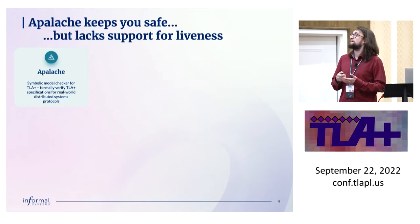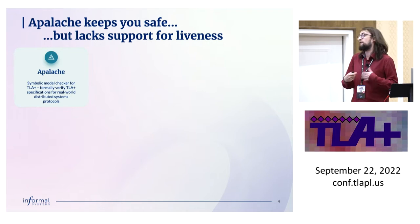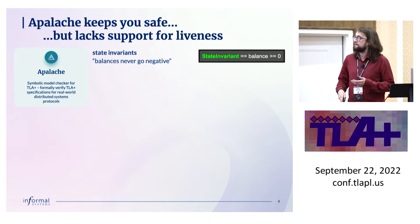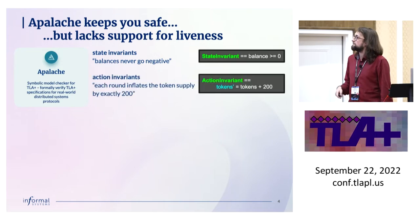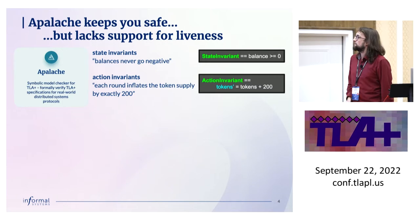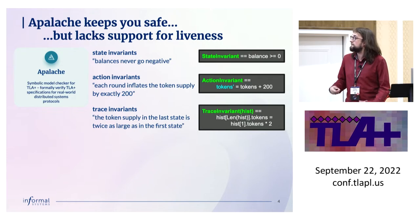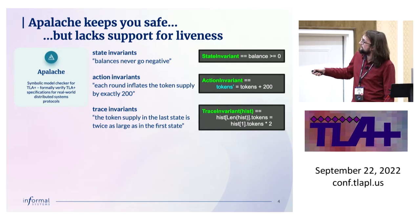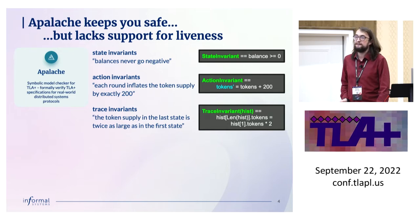Apalache is good for safety properties, but it lacks proper support for liveness. You can state invariants — for example, some balances never go negative — which only cares about the current state. You can also verify action invariants, like from one round to the next the token supply is increased by 200, reasoning about two consecutive states. Apalache also supports trace invariants, where you have the trace as a history and can argue about arbitrary properties on it — for example, the number of tokens in the last state is twice the number in the first state.